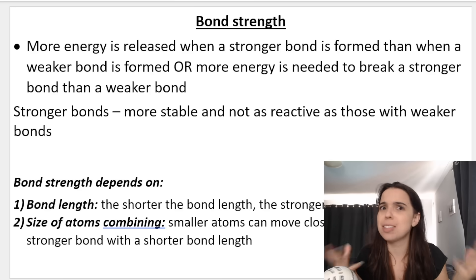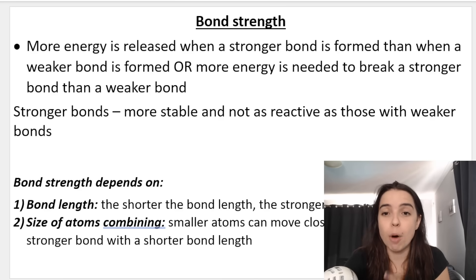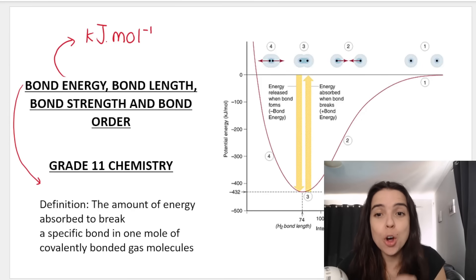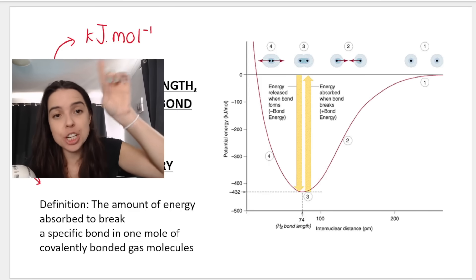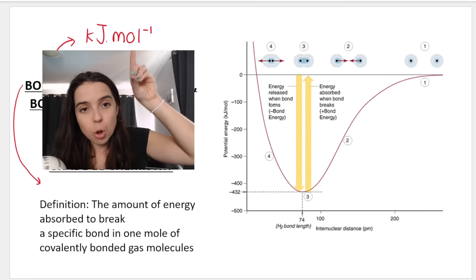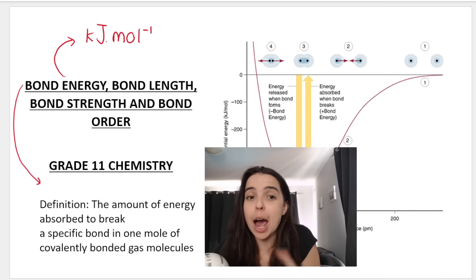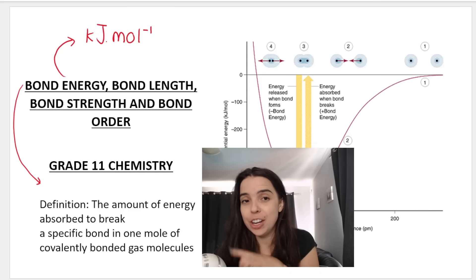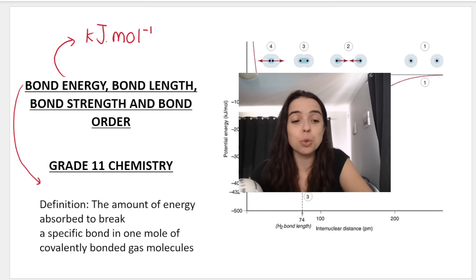Bond strength depends on bond length, and the shorter the bond length, the stronger the bond. Bond strength also depends on the size of the atoms combining — smaller atoms can move closer together, forming a shorter and therefore stronger bond. The unit for bond energy is kilojoules per mole. The definition is: the amount of energy absorbed to break a specific bond in one mole of covalently bonded gas molecules, which is why the unit is kilojoules per mole.